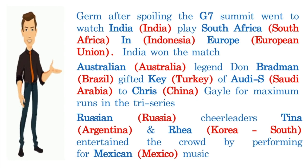The remaining 7 members are the G7 countries: Germany, Canada, France, Italy, Japan, USA, and UK.